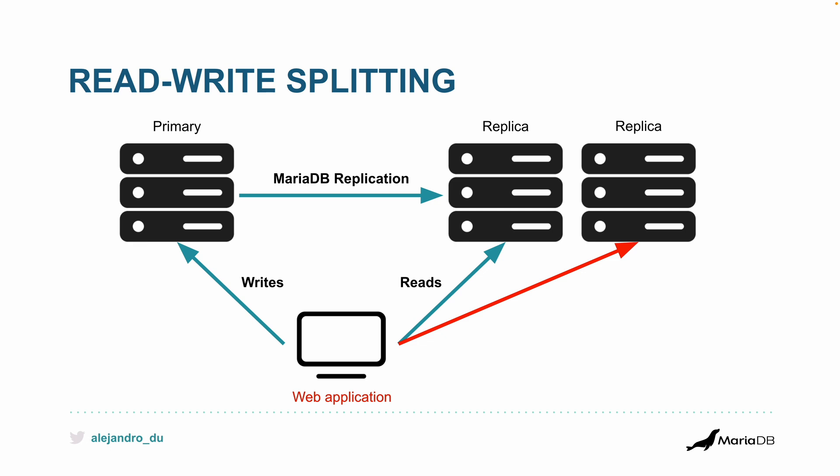I put this arrow in red for a reason: when you add or remove a replica, you need to reconfigure the web application. It could even be worse — you may have to implement the load balancing yourself, or implement some kind of dynamic configuration in the web application. That's code you have to maintain.